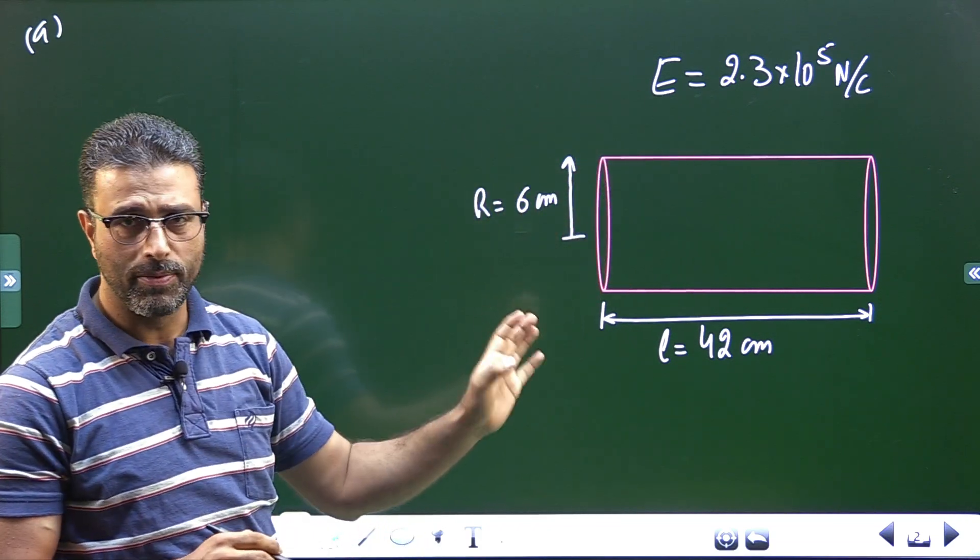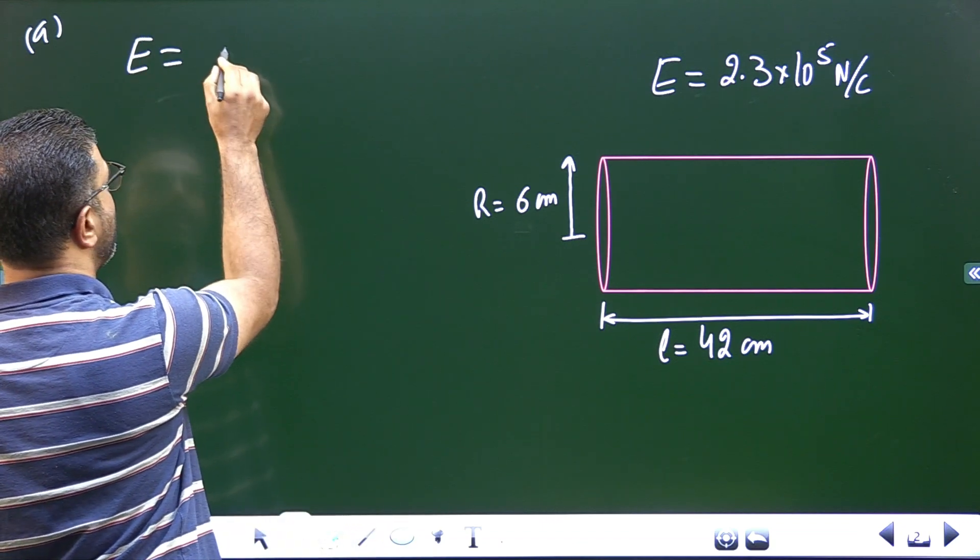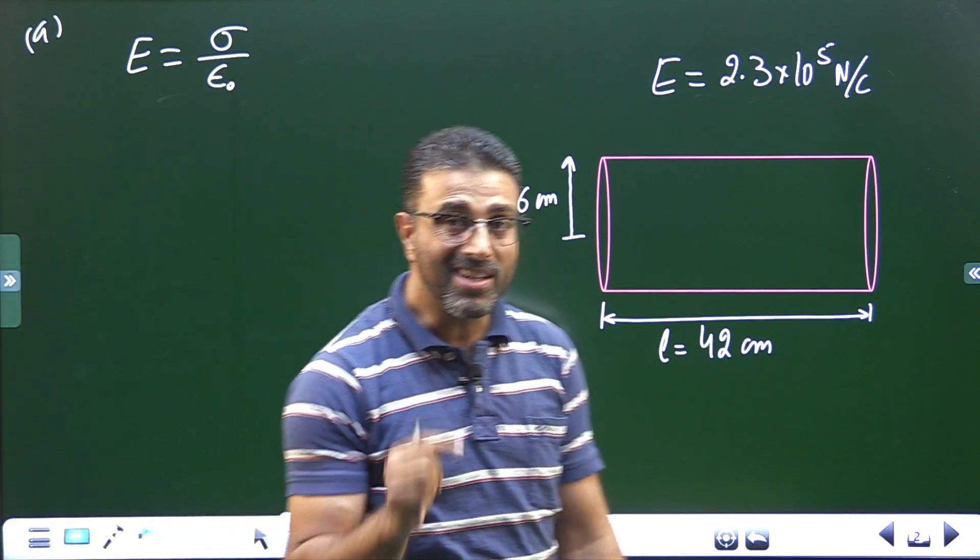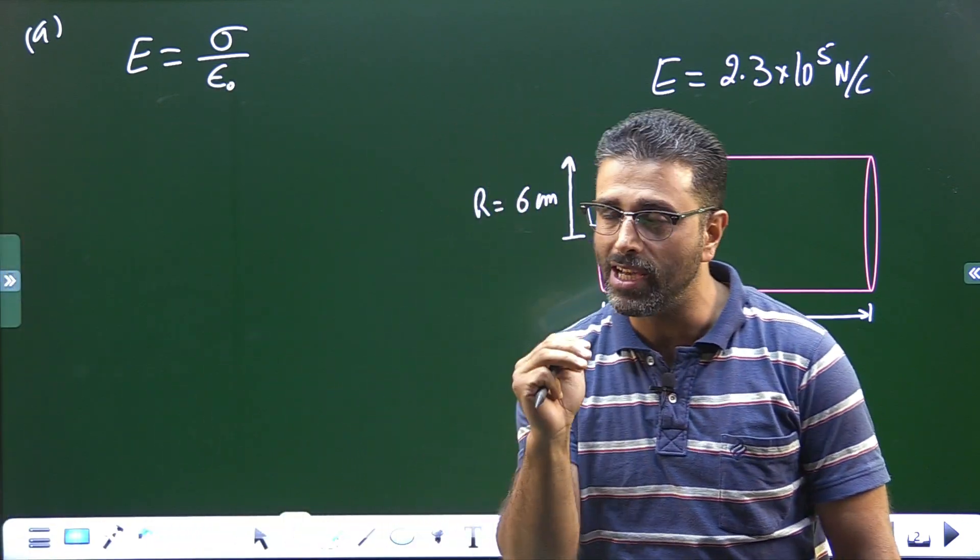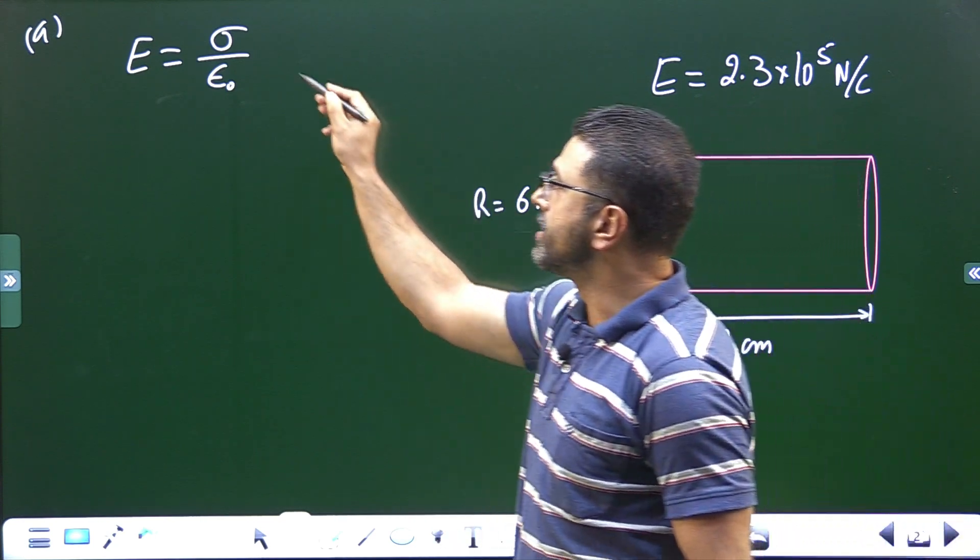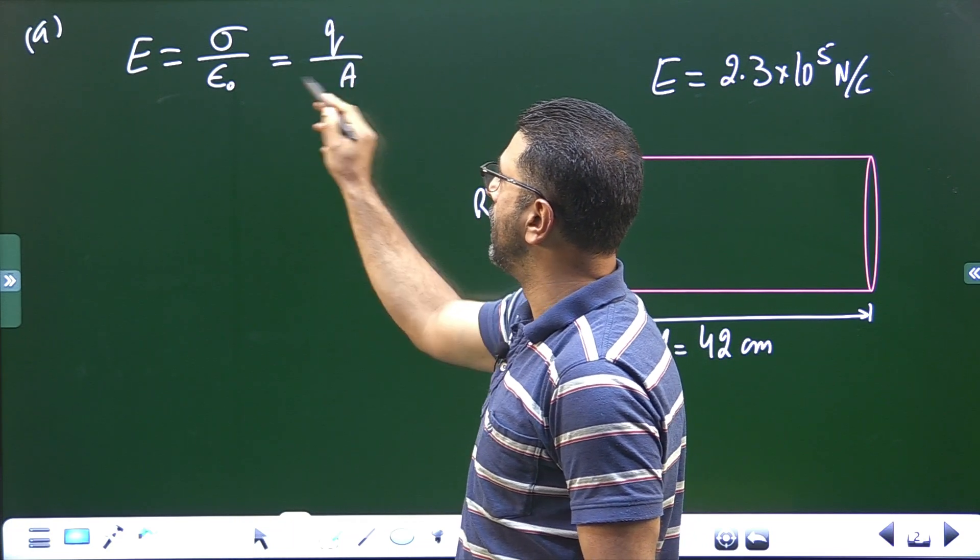Field just outside a metallic body, just above the surface of a metallic body, is σ/ε₀, where σ is charge per unit area, so that is Q/A, and we have ε₀ already there.